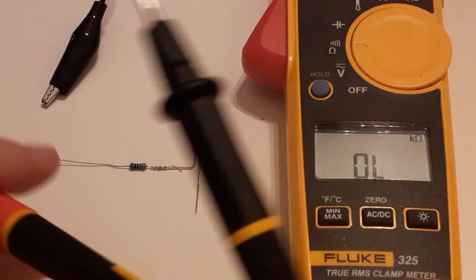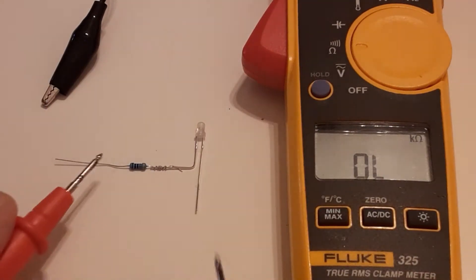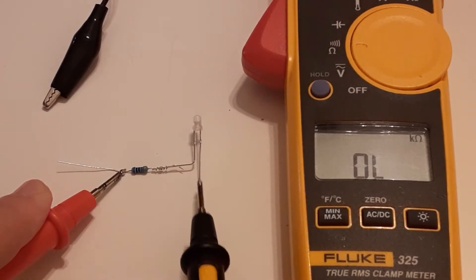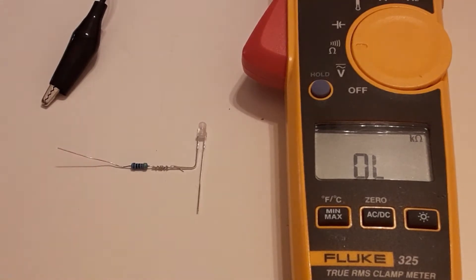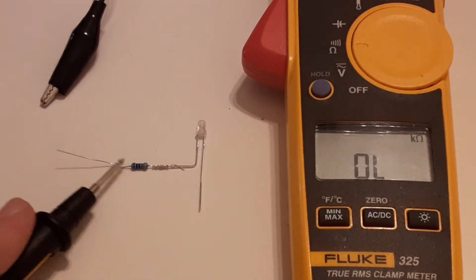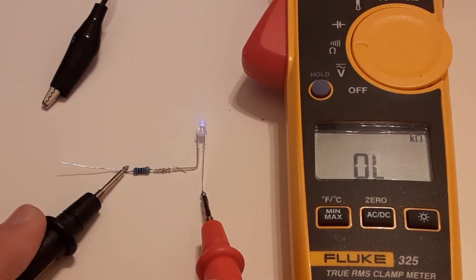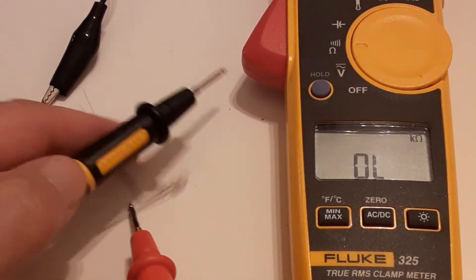Now what if I tried to measure it across or through the LED? What would happen? Let's give it a try. I'm going to put the probe here and go to the plus side of the LED. I'm not getting anything there. Let's switch the probes around. Put minus here and plus here. I'm still not getting anything.